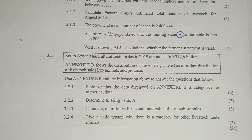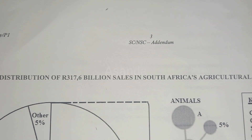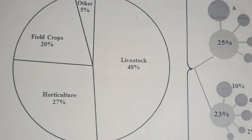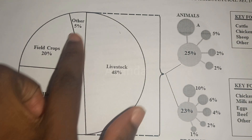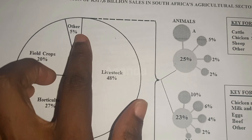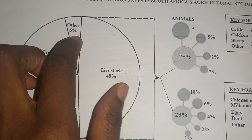An annexure shows the distribution of these sales, as well as a further distribution of livestock sales into animals and produce. Looking at the chart: field crops make up 20 percent of that money, 27 percent comes from horticulture, 48 percent comes from livestock, and others make about 5 percent.